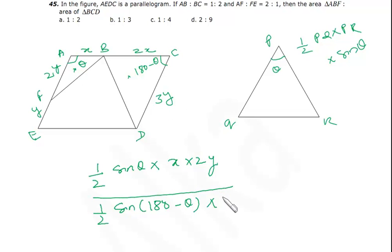Half and half is cancelled, x and x is cancelled, y and y is cancelled, 2 and 2 is cancelled. Now the only thing you must be knowing is sine 180 minus theta is equal to sine theta only.